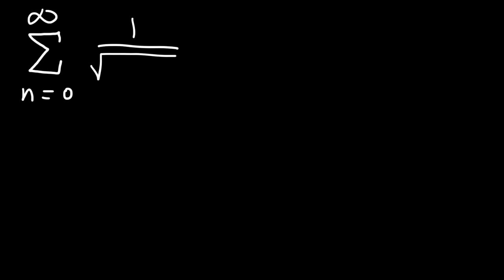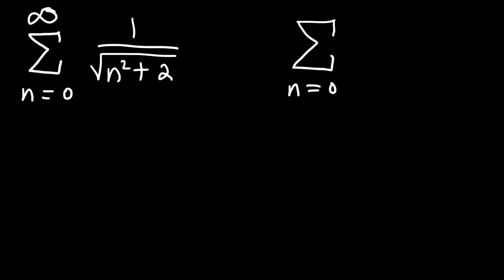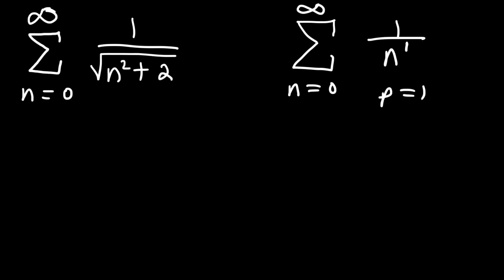Now let's move on to our second example. We have a series from 0 to infinity of 1 divided by the square root of n squared plus 2. Use the limit comparison test to see if this series converges or diverges. If we eliminate the 2, we get 1 over the square root of n squared, which equals 1 over n — the harmonic series, which is a p-series with p equal to 1. Since p is equal to 1 or less than 1, this is a divergent series.